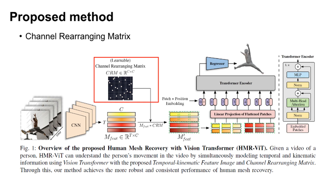To use a feature image as a 2D image input of Vision Transformer, the feature image should first be divided into multiple patches. When dividing the feature image, information with similar temporal and kinematic meaning should be grouped to ensure good modeling between patches. However, the width elements of the feature image representing the channel components are not arranged in a kinematically meaningful order. Therefore, we propose a Learnable Channel Rearranging Matrix, CRM, to allow spatially close kinematic features to be located close to each other on the channel dimension, allowing each patch to be composed of information with a more similar kinematic meaning.